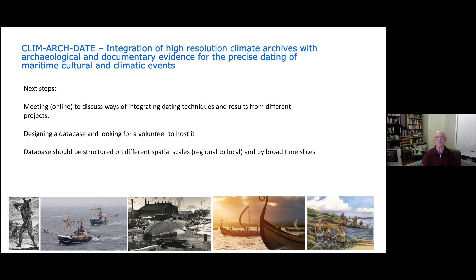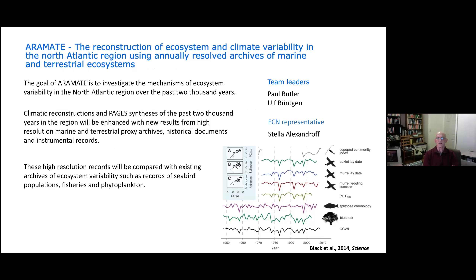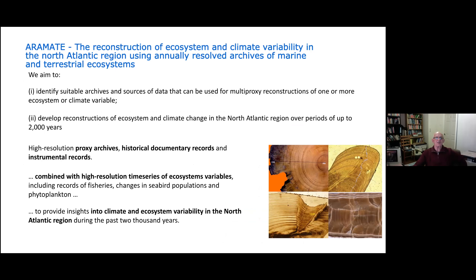Aramate is slightly different — it's not really the archaeological side, but it is the relationship in the North Atlantic between climate variables and ecosystems. It's based on a paper written back in 2014 by Brian Black, which related to the Pacific. The idea is to look at different eco-records of ecosystem variability and see if they can be related together as common variables to look at the relationship with climate modes and oceanographic modes in the North Atlantic. The aim is to identify suitable archives and sources of data and develop reconstructions to provide insight into climate and ecosystem variability in the North Atlantic region over the past 2,000 years.